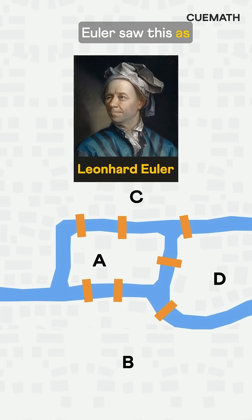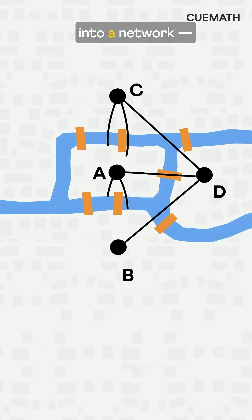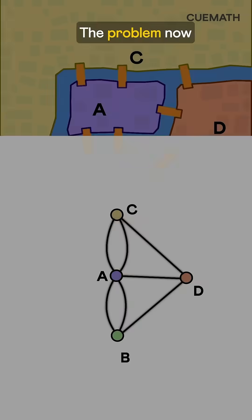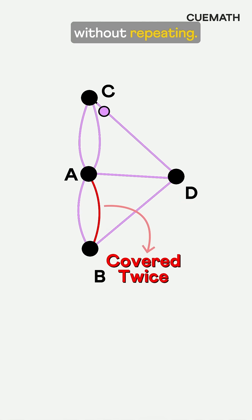Mathematician Leonhard Euler saw this as a math challenge. He turned the city into a network. Landmasses as points, bridges as lines. The problem now simplifies to covering all the lines once without repeating.